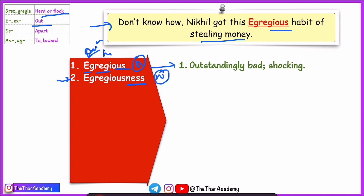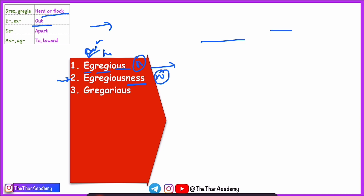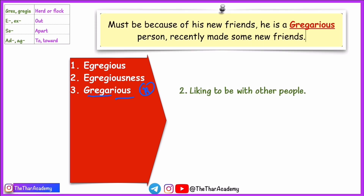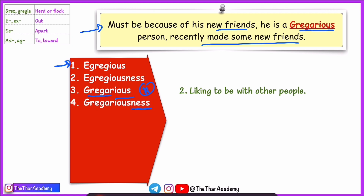The next word is 'gregarious,' again formed from 'greg.' The suffix '-ous' makes it an adjective. Gregarious means a person who likes to live in a herd — someone who likes to be with others, who enjoys the company of people. For example: 'Must be because of his new friends — he is a gregarious person.' Nikhil is a gregarious person who likes being with people, and his new friends may be the reason he picked up that egregious habit. The noun form is 'gregariousness.'